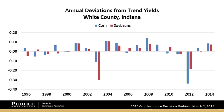We had some counties in Indiana and throughout the Corn Belt where actual yields in 2014 were quite a bit higher relative to trend. In fact, we had some counties in Indiana with yields well above 25% above trend, and a few cases maybe above 30%.